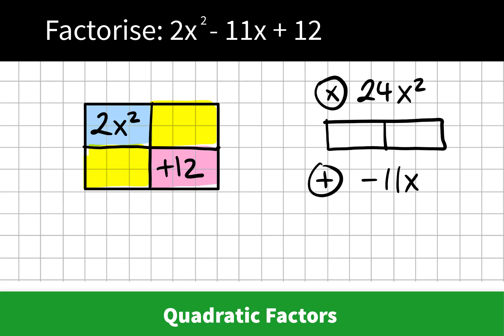So we start thinking of factors of 24x squared. We know something about these factors as well. We know that when they multiply, it's going to give us a positive 24x squared, and when we add, we get negative 11x. So there must be two negatives and there are two x terms.